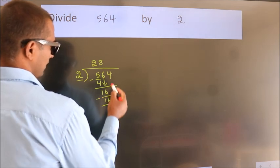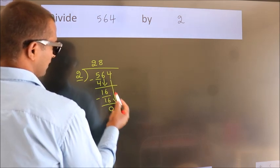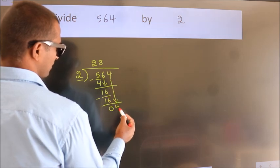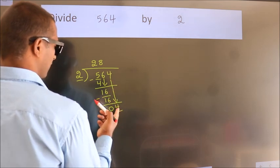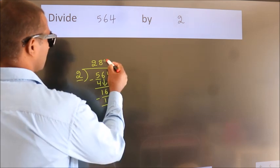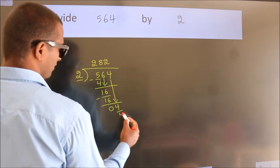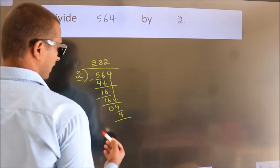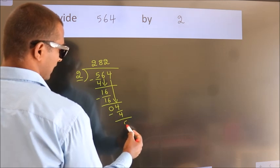After this, bring down the beside number. So 4 down. So 4. When do we get 4? In 2 table. 2 times 2, 4. Now we subtract. We get 0.